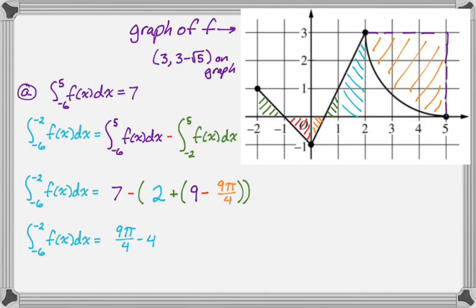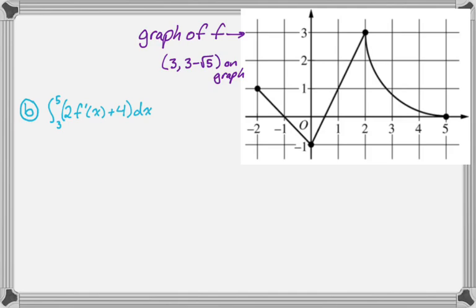Now let's look at part B. In part B, we want to evaluate the integral from three to five of 2f′(x) + 4 dx. The first thing I'm going to do is break this up into multiple integrals: pull out the two and integrate f′(x) from three to five, plus the integral from three to five of four dx.